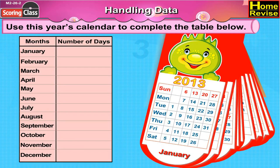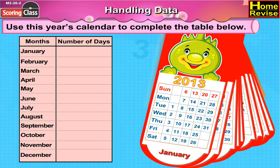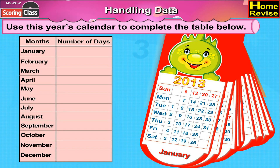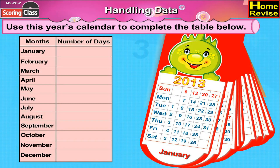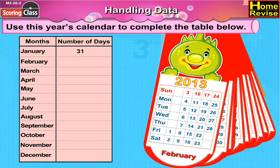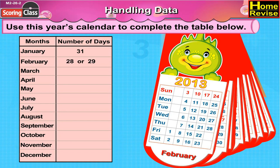Handling data. Use this year's calendar to complete the table below. Here is the calendar and here is the table which has 2 columns: months and number of days. Under months, we have months from January to December. In January, how many days are there? That's correct — 31. So write 31 in front of January. In February, either we have 28 days or 29 days, so write that in front of February.